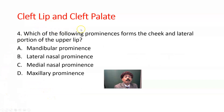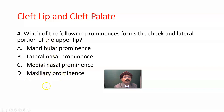Question four: Which of the following prominences forms the cheek and lateral wall of the upper lip? A) Mandibular prominence, B) Lateral nasal prominence, C) Medial nasal prominence, D) Maxillary prominence. The answer is D, maxillary prominence.